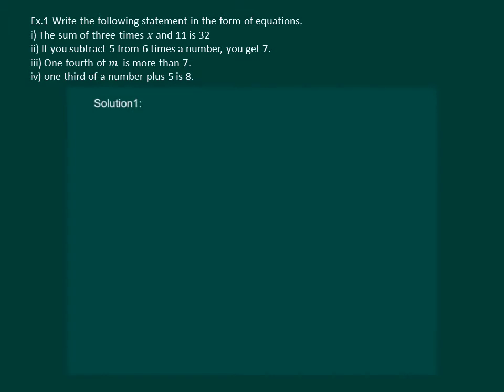The first part reads: the sum of 3 times x and 11 is 32.